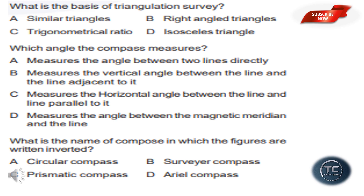What is the name of the compass in which the figures are written inverted? In this type of compass, the figures are written inverted. The answer is option C: Prismatic Compass.